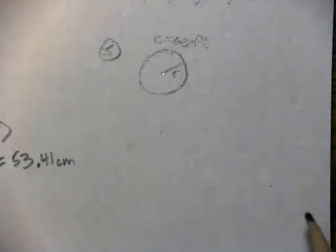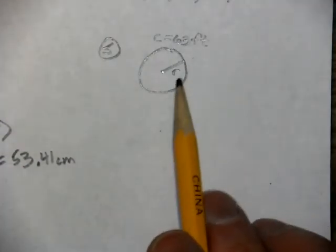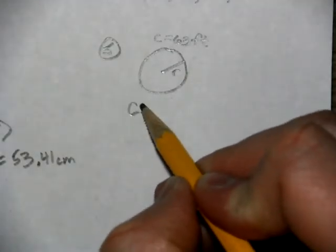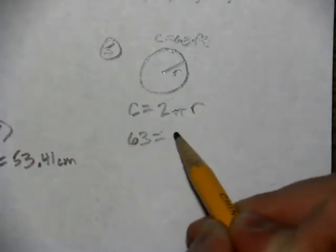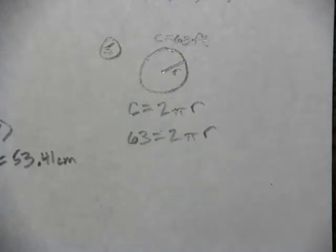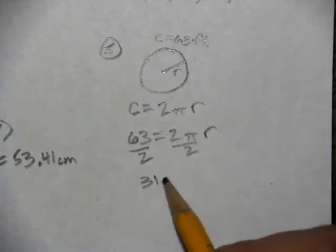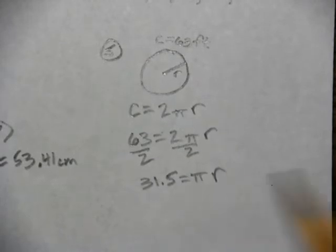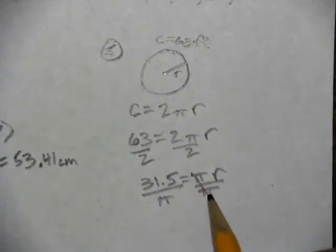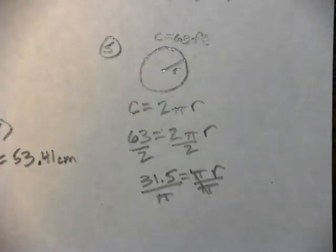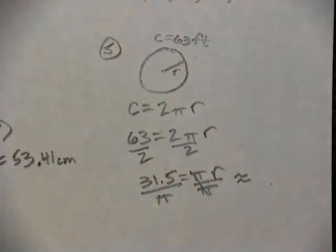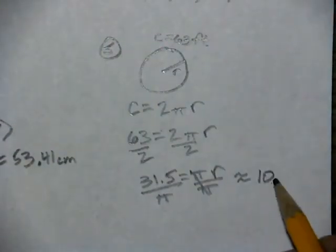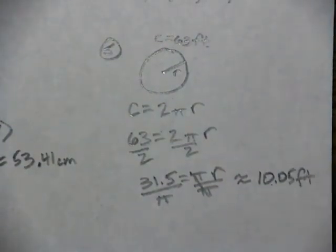Now with number five, we know what the circumference is but we're going to calculate what the radius is. We're going to use the formula 2πr because it deals with radius. If we divide by 2, we'll get 31.5. Divide by π and that gives us our exact answer for the radius, which is approximately 10.05.